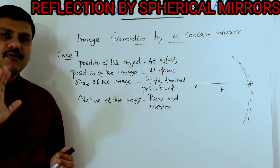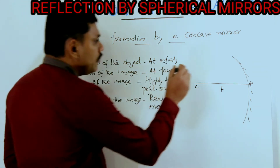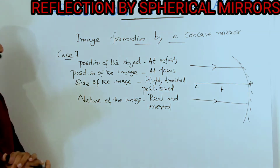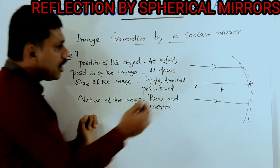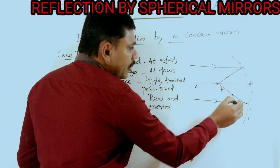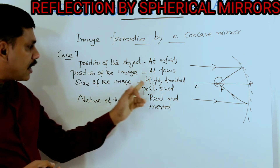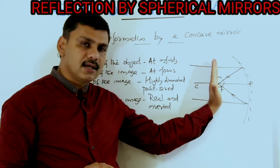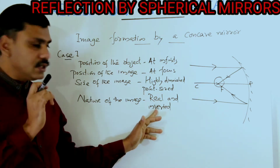If we focus on a distant tree or distant object, the light rays from that distant object will be parallel to the principal axis. According to the rule, a ray which is parallel to the principal axis, after reflection, can only pass through the focus. So both rays, after reflection, pass through the focus, forming a very small image there — the image is highly diminished and inverted.